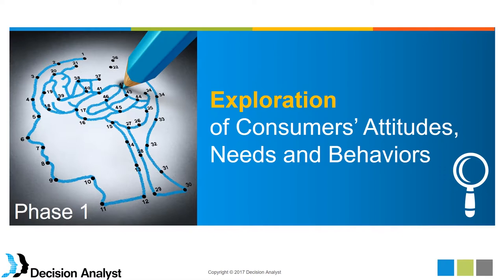For successful segmentation, you need to have as much information about your target audiences as you possibly can. With your kids, you live with them and get to know them. With your customers, you have to find out about them through research. The key in this qualitative phase is to cast as wide a net as possible to ensure you understand all there is to know about your customers.